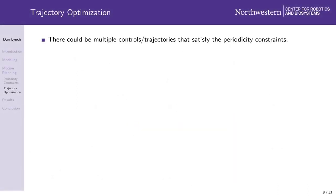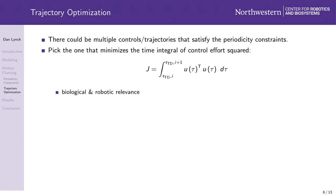This problem could have multiple solutions, so we pick the one that minimizes the time integral of control effort squared. Minimizing effort is reasonable for biological locomotors since it relates to minimizing muscular exertion. It's also relevant to robots. For example, it could relate to minimizing motor current and therefore heat dissipation. Also, this cost function is convex, and this comes in handy when we eventually solve this problem numerically because it aids convergence.